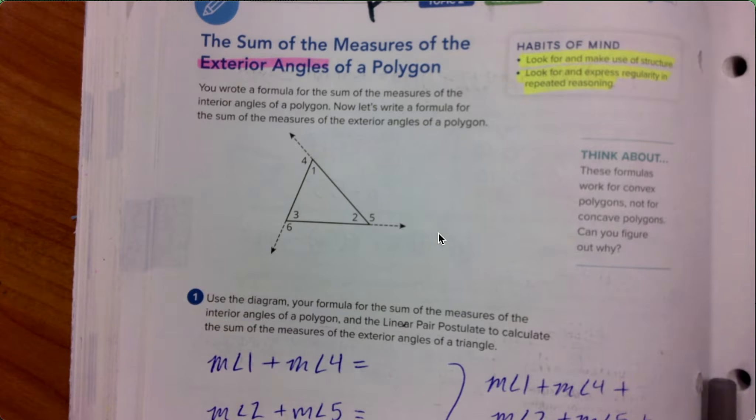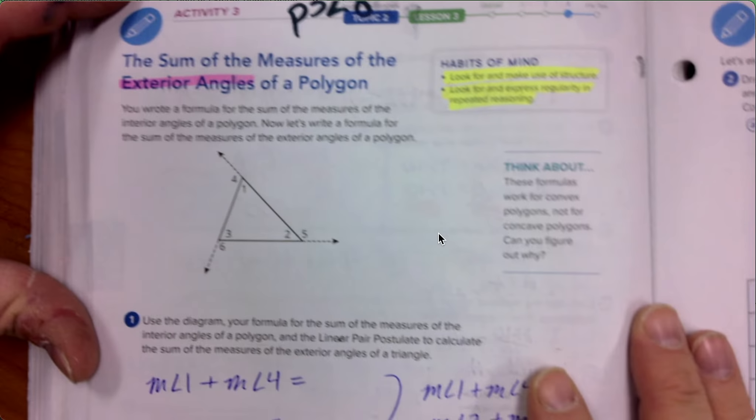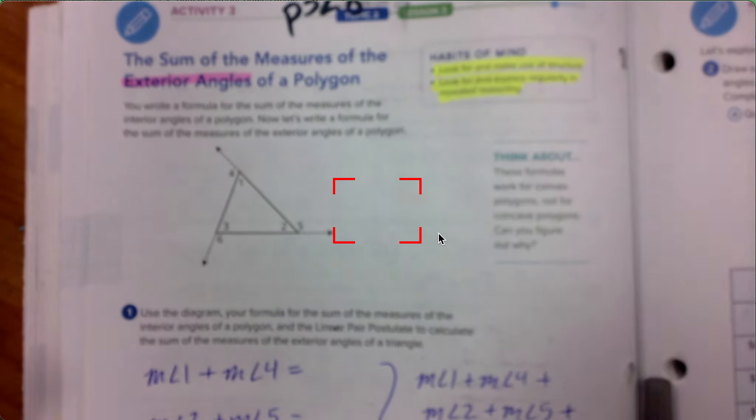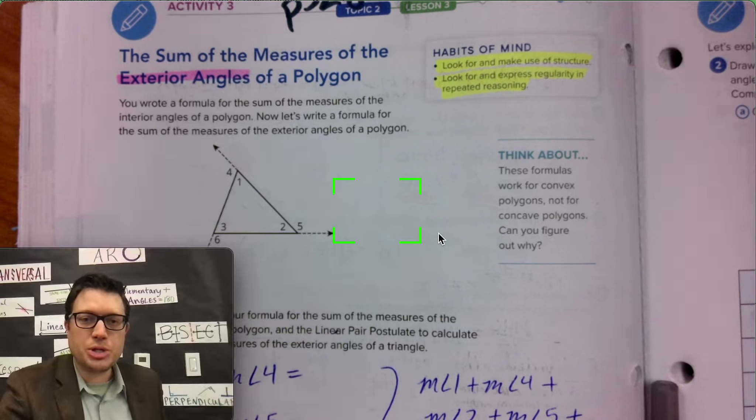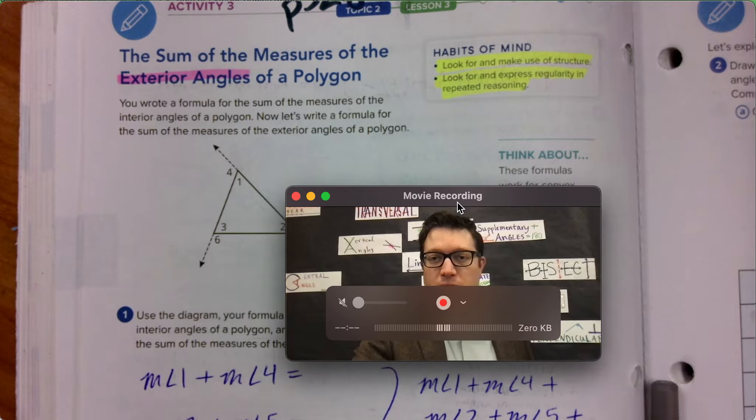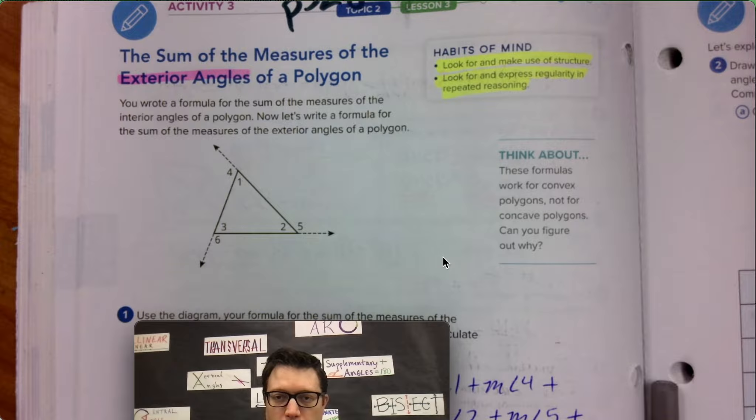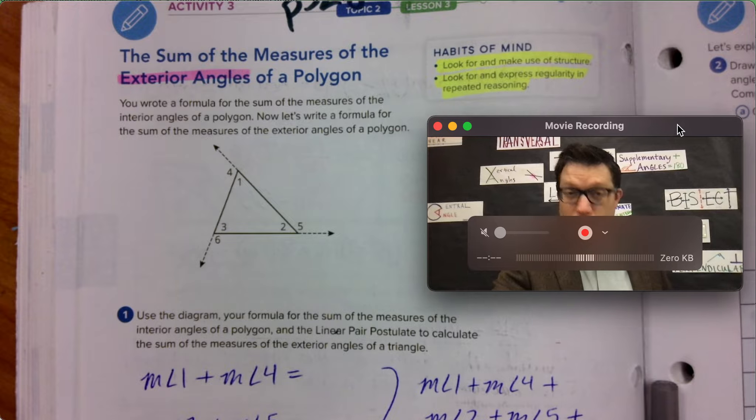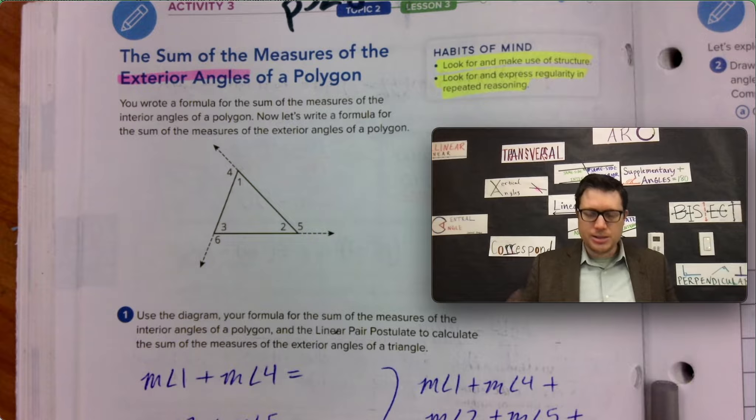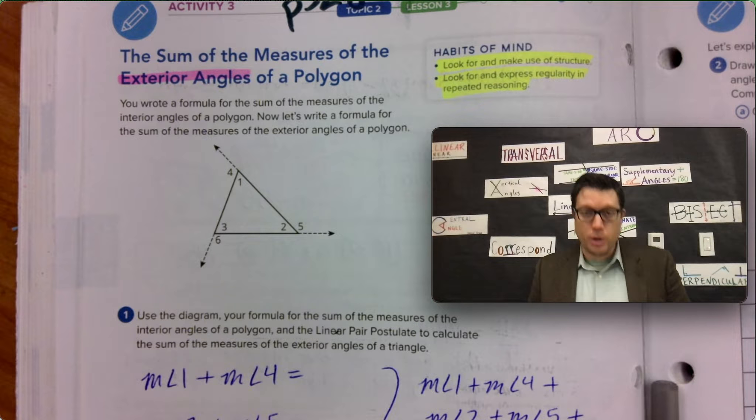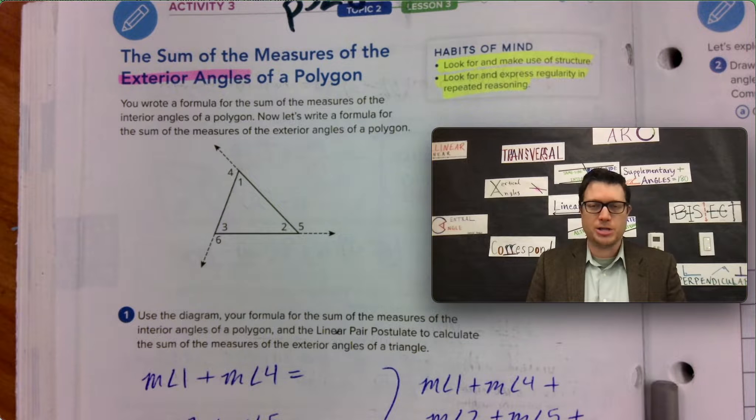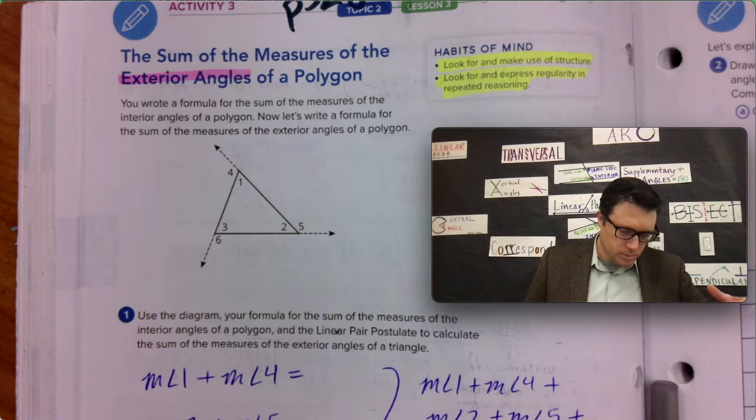Let's do our work for this lesson. Let's go. Okay, have your highlighter, have your utensil to write with, and then I've done some pre-writing along the way. Remember, these formulas work for convex polygons, but not for concave polygons. Can you figure out why? There is some information you need to consider when you have a concave versus a convex polygon.